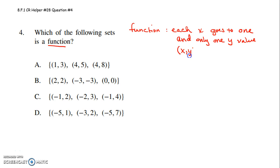So you know your points are x comma y. Each x can only go to one y. So let's check this out.